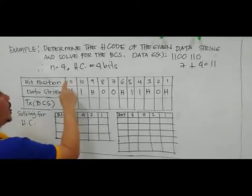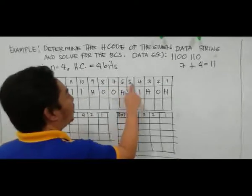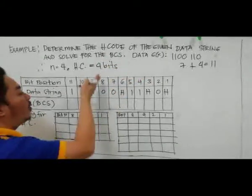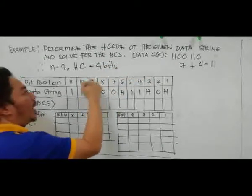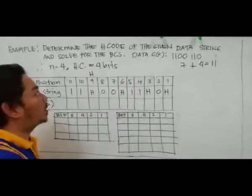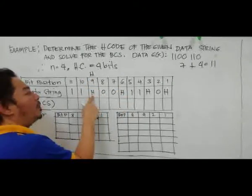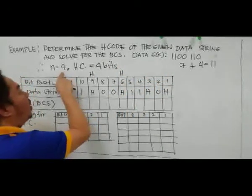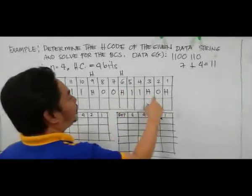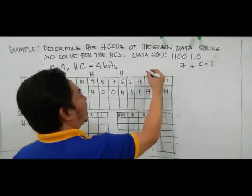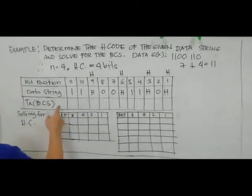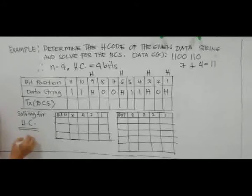The bit positions go from 11 down to 1. We insert our 4 Hamming bits at bit positions 9, 6, 3, and 1. The remaining positions hold the data bits. Now we solve for the Hamming code values at these positions.